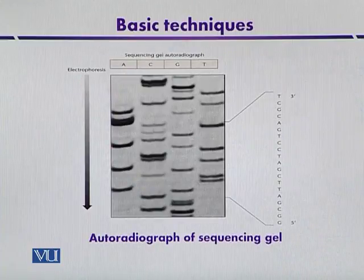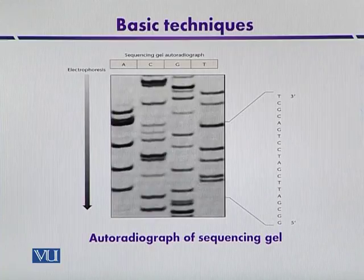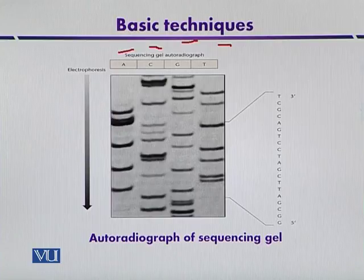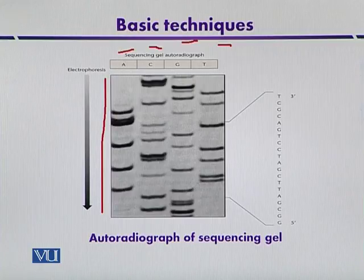This is a typical autoradiograph of a sequencing gel. Different bases have been placed in different columns — adenine, cytosine, guanine, and thymine. By using gel electrophoresis, the DNA fragments were separated. After separation, all these DNA fragments were radio-labeled and then placed with X-ray film, and then the separation of different molecules was visible in the autoradiograph.